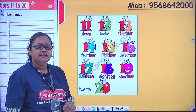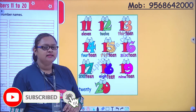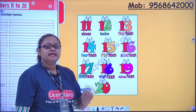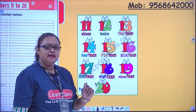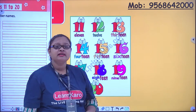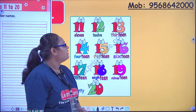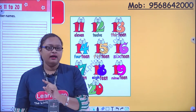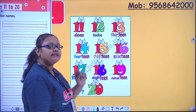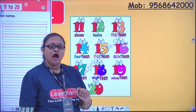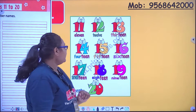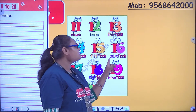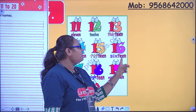Now we'll start with the spelling of 11. What is the spelling of 11? E-L-E-V-E-N. Repeat after me: E-L-E-V-E-N. 11. Then comes 12: T-W-E-L-V-E. 12. Then 13: T-H-I-R-T-E-E-N. 13. Then comes 15: F-I-F-T-E-E-N. 15. Next comes 16: S-I-X-T-E-E-N. 16.